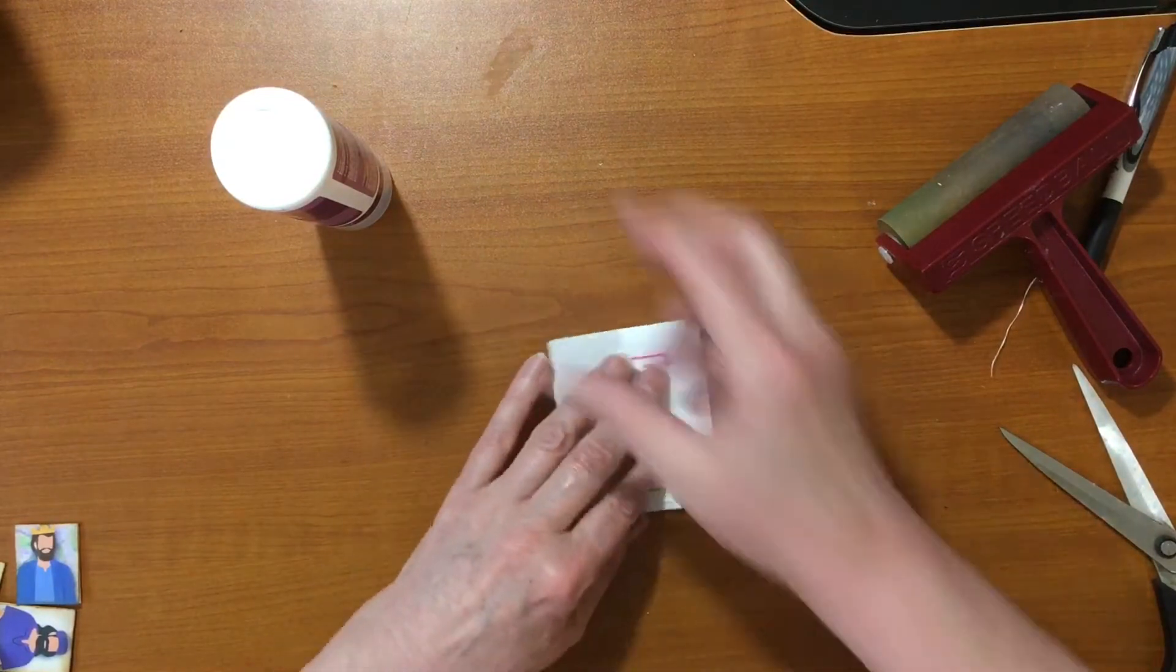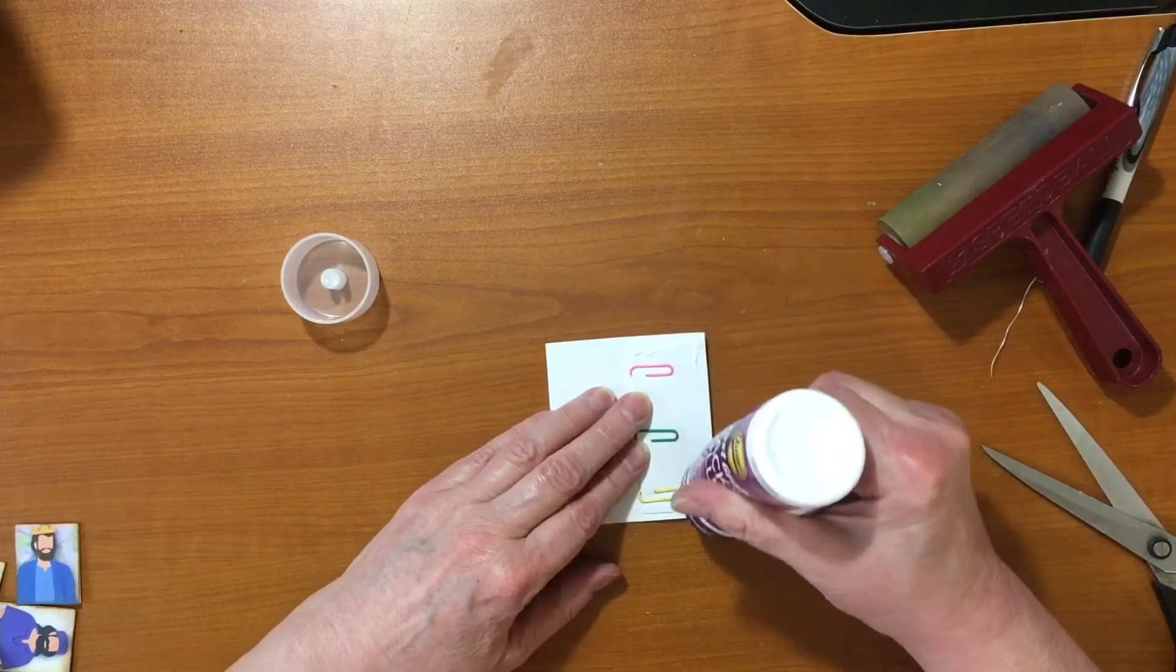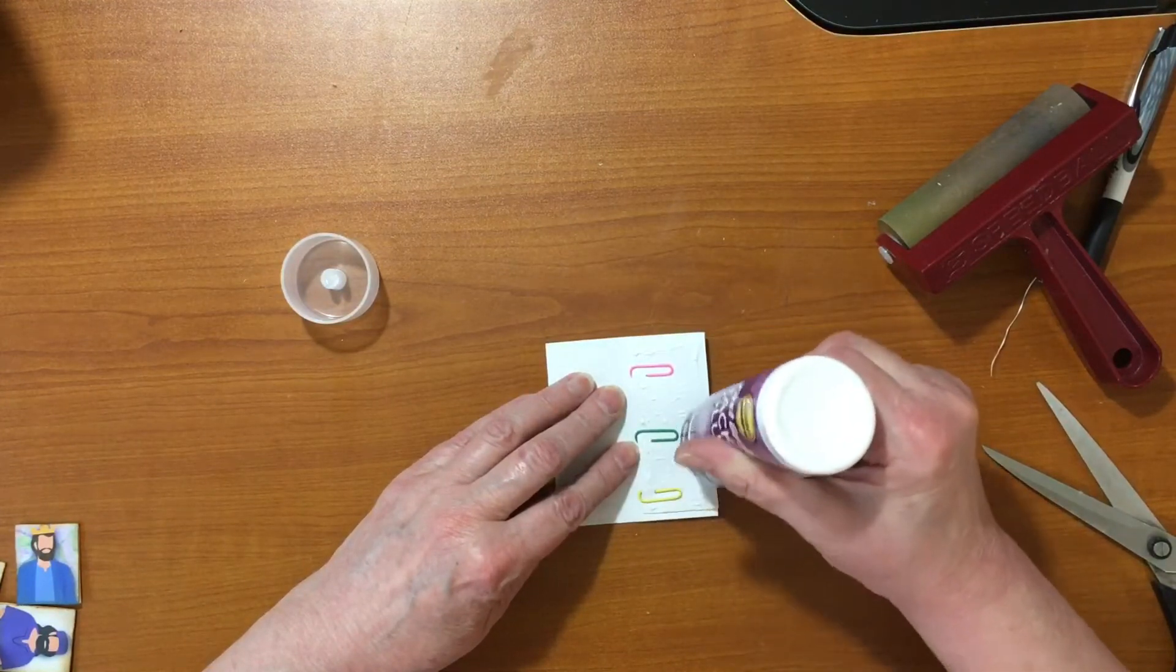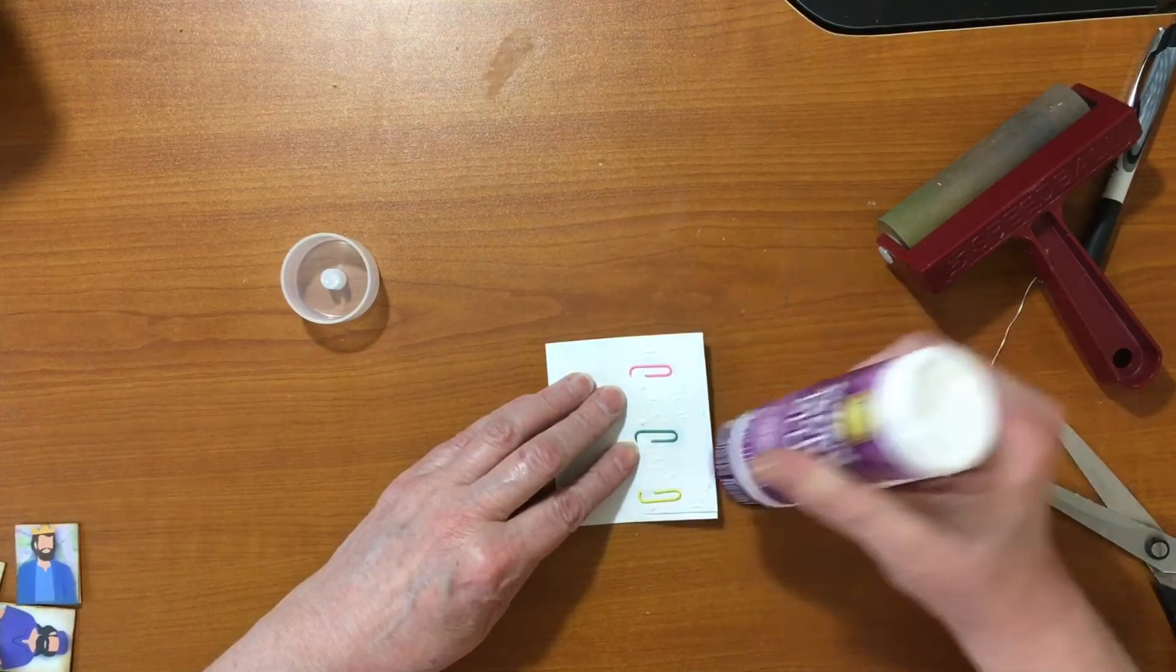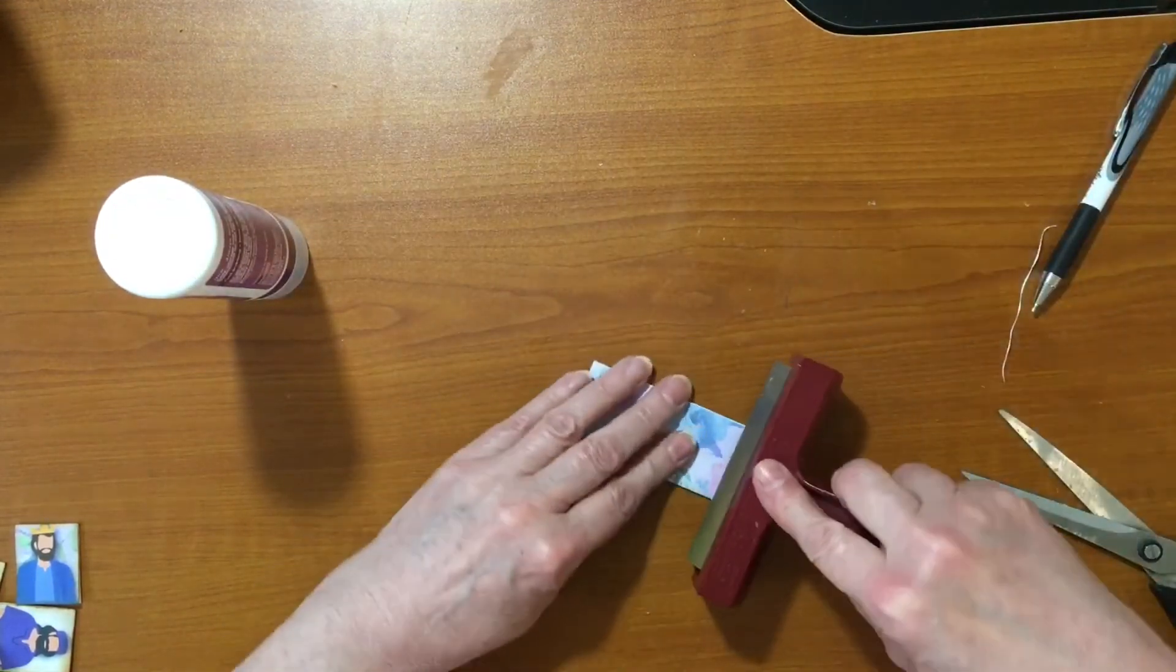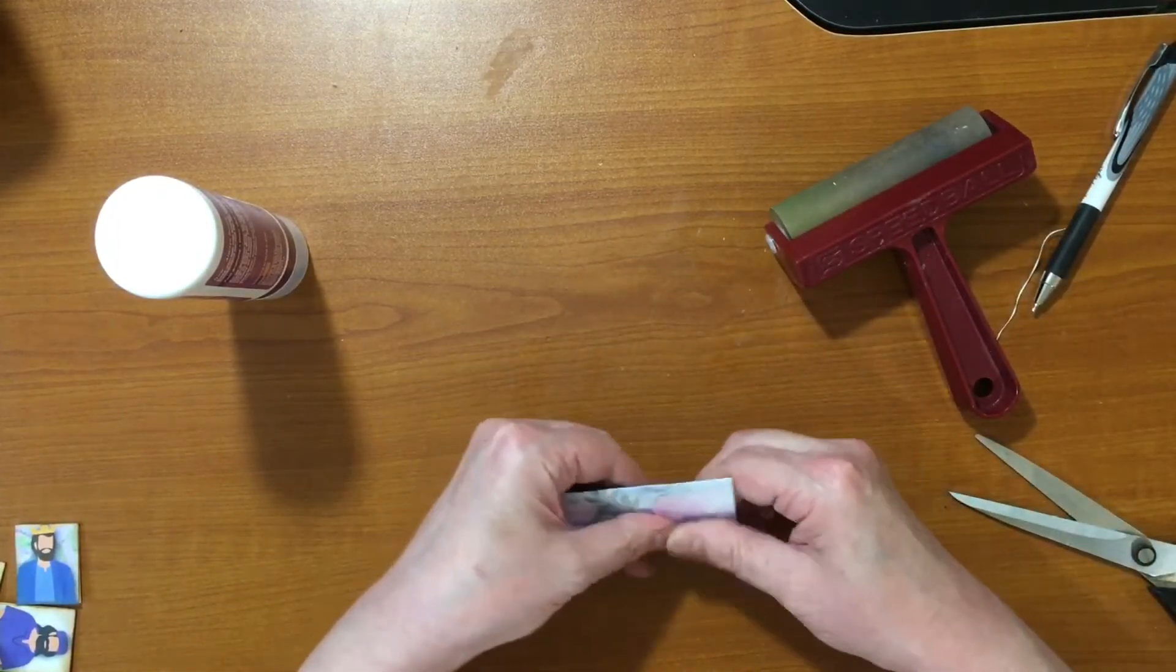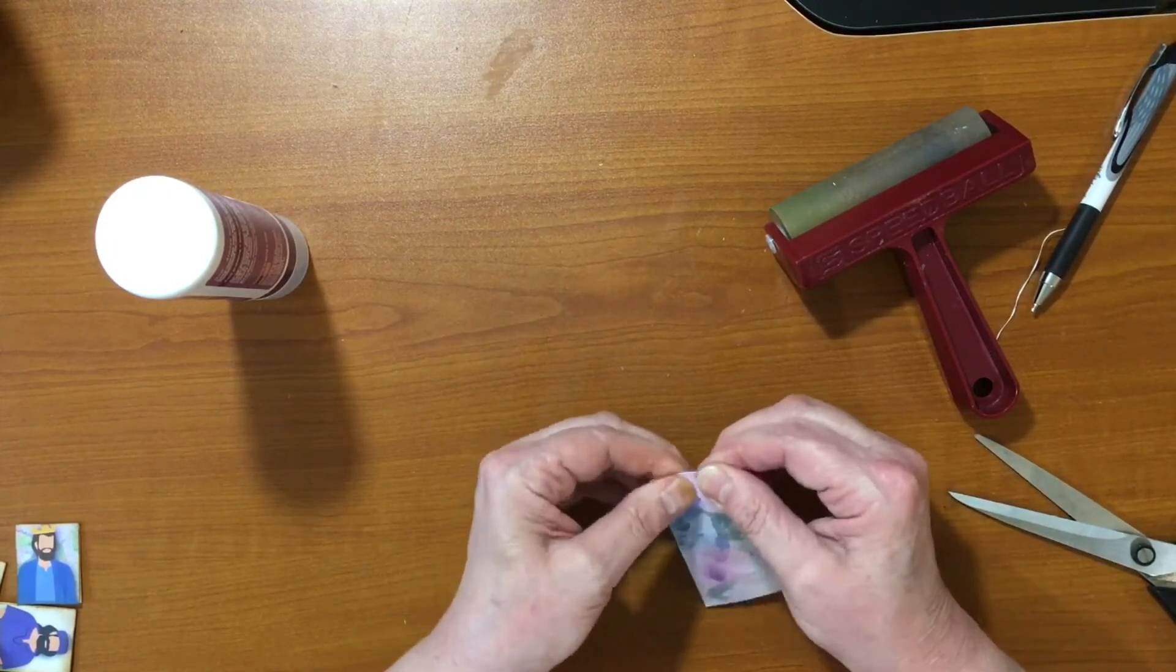Then we want to glue the other side. Flip it over and glue the other side of the paper clips here. Again, just a generous amount. You don't have to go crazy all inside between the paper clips. Flip that over, take my little brayer, get inside, and I use my hands a little bit too to squish that glue down.